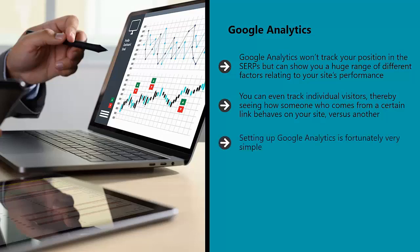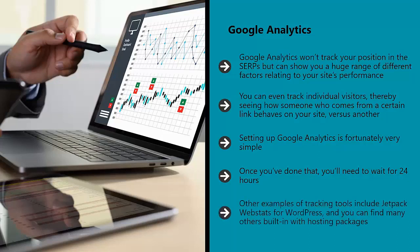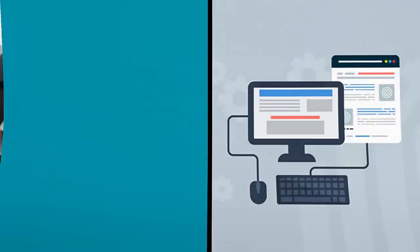Setting up Google Analytics is fortunately very simple. You'll need to place a small tracking code on each page of your site, which you can get from Google. You can do this manually or use a plugin or developer to handle it for you. Once you've done that, you'll need to wait for 24 hours — this gives Google long enough to collect some basic data, which can then be used however you wish. You'll choose to set up a view, which will be called a lens, and will include the stats you're interested in at that time. Other examples of tracking tools include Jetpack WebStats for WordPress, and you can find many others built in with hosting packages.